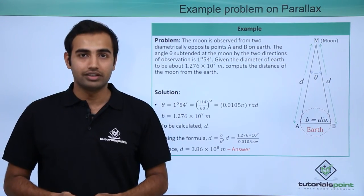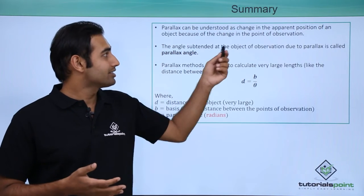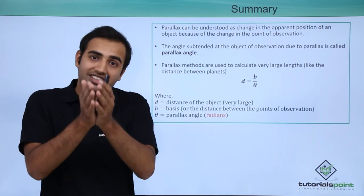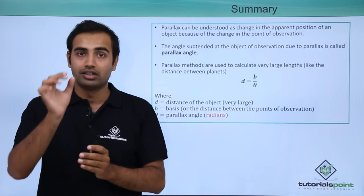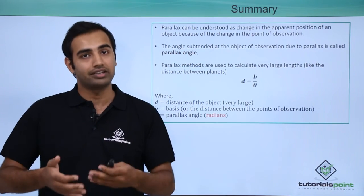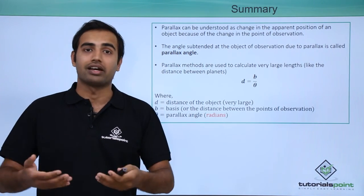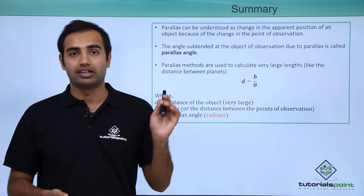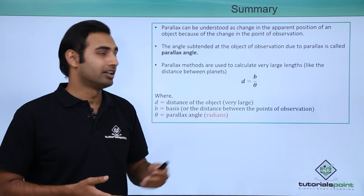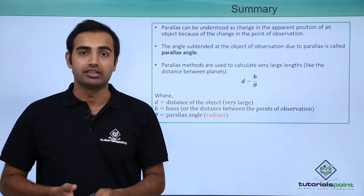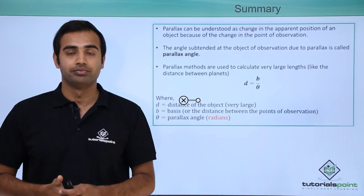So summarizing what we just learned, we can say that parallax can be understood as a change in apparent position of an object because of the change in the point of observation. Only because an observer changed its location, the location of the object seems to change. That phenomenon is called parallax. The angle subtended at the object of observation due to parallax is called the parallax angle. In our examples it was the angle theta. Parallax methods are used to calculate very large lengths by the formula d is equal to b by theta where d is the extremely large length that we are trying to estimate. I hope these ideas are very clear to you. Thank you.